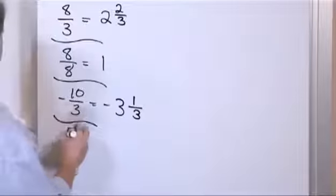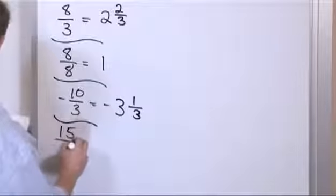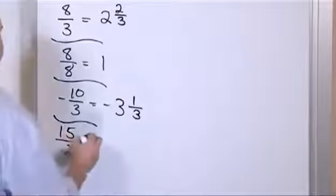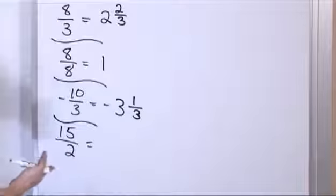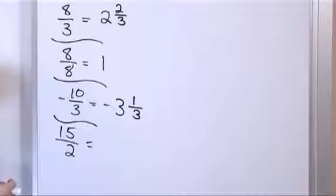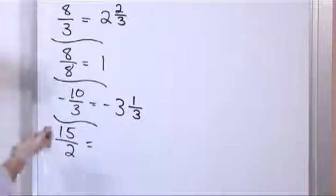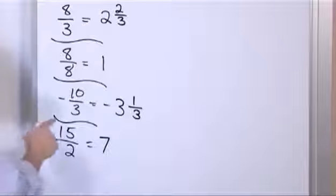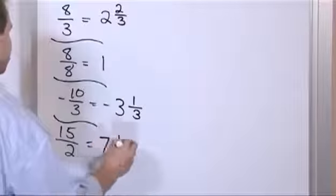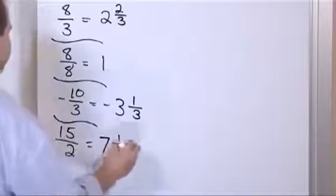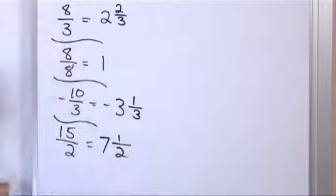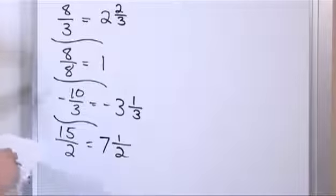What about fifteen over two? How many times can two go in? Two times seven is fourteen, two times eight is sixteen — that's too many. So it can go seven whole times. Fifteen minus fourteen gives a remainder of one, written out of two, which is one half. So it goes seven whole times plus another half — seven and a half. It can't quite fit eight times.